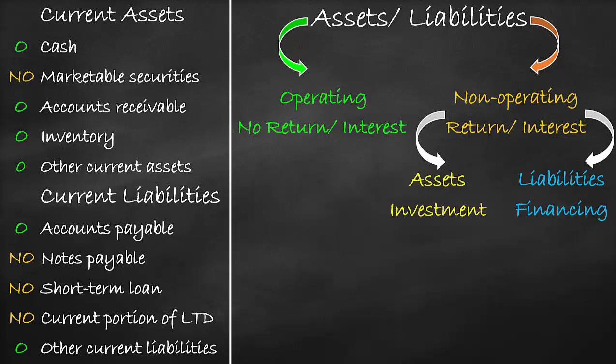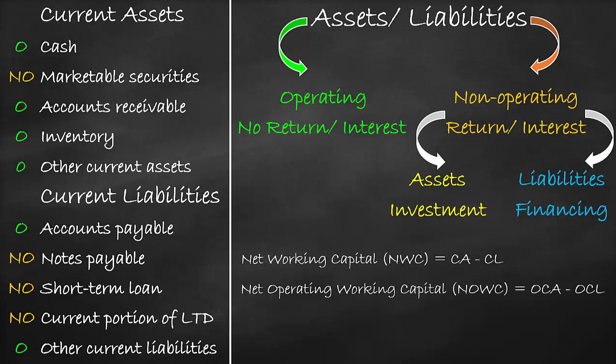Further, we could estimate net working capital as current assets minus current liabilities, including all items of current assets and current liabilities. Then, we can estimate net operating working capital as operating current assets minus operating current liabilities. Operating current assets include cash, accounts receivables, inventory, and other current assets. Operating current liabilities include accounts payables and other current liabilities. Please note: if we estimate the statement of cash flows or free cash flow, we do not include cash as we're estimating the amount of cash. That's why in that case, we also call net operating working capital as non-cash working capital.